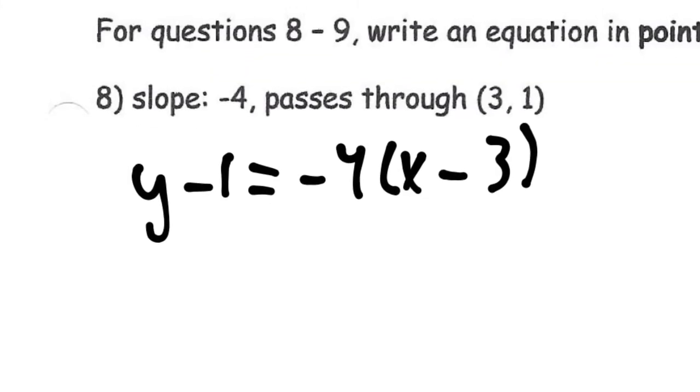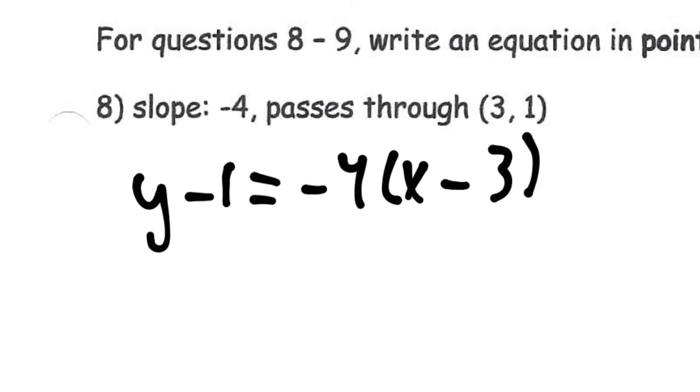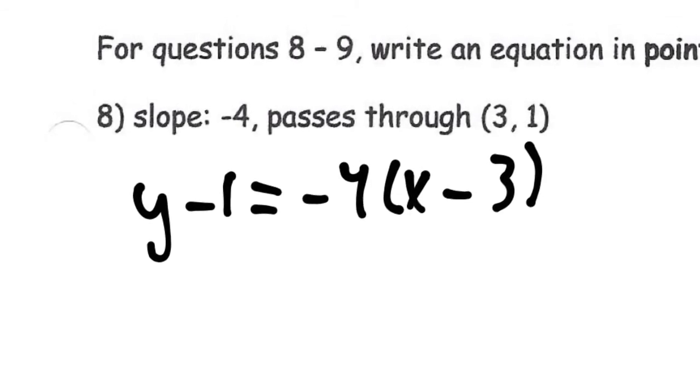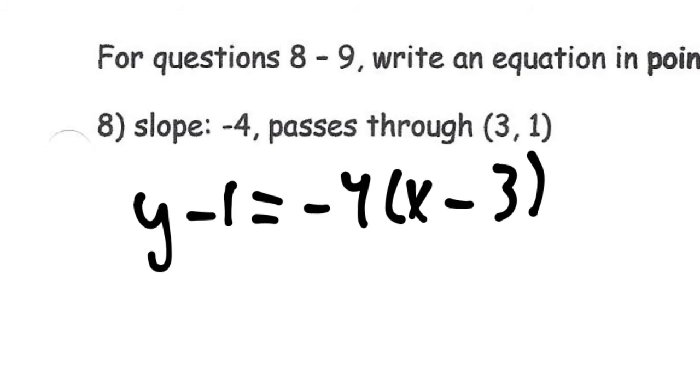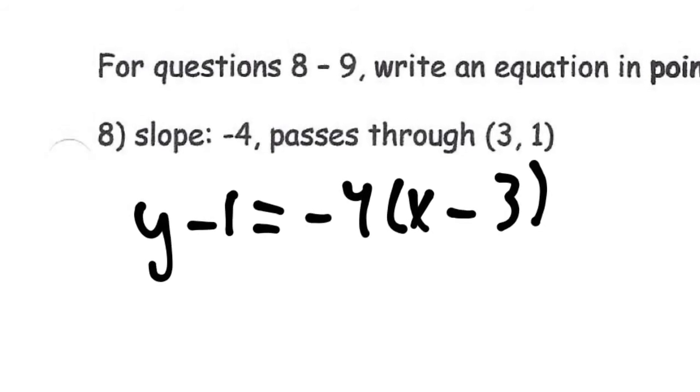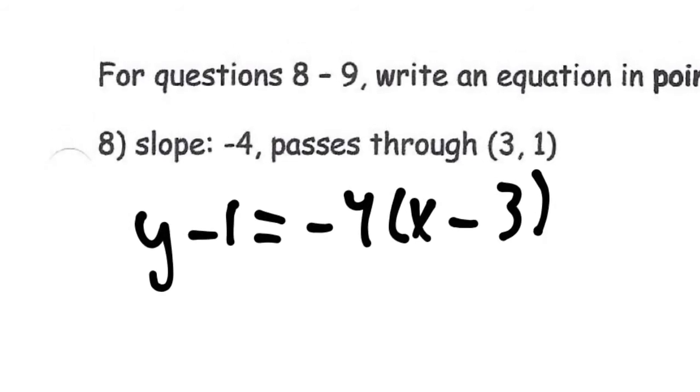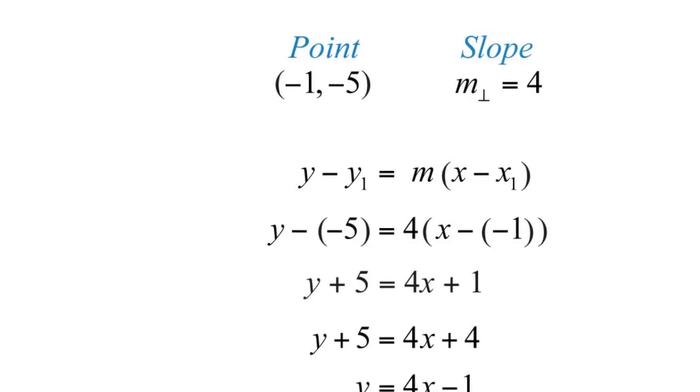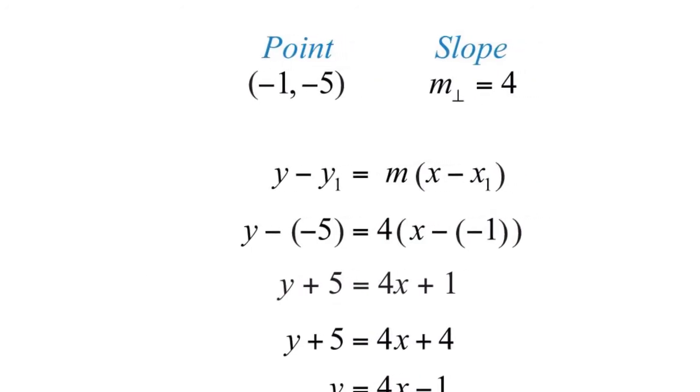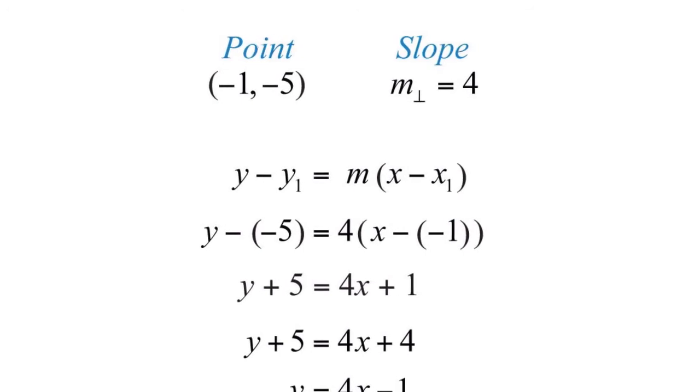So as you can see, the slope is put in the m position and the ordered pair have been distributed into the problem, and that right there is the answer to a point-slope form equation.